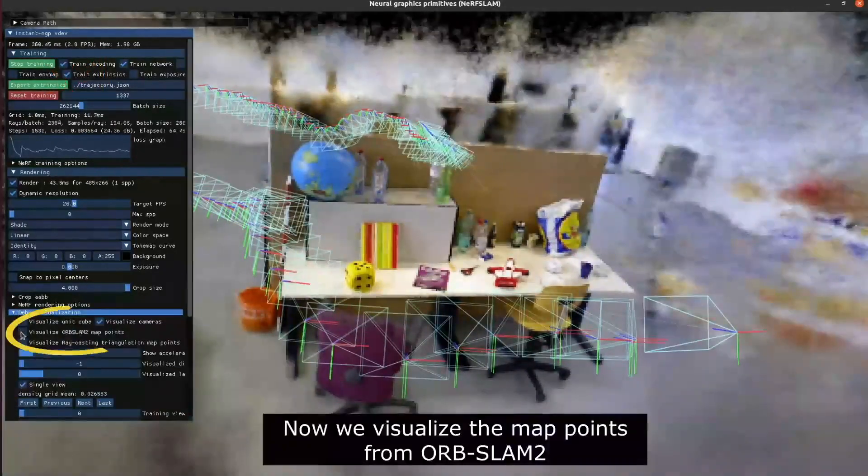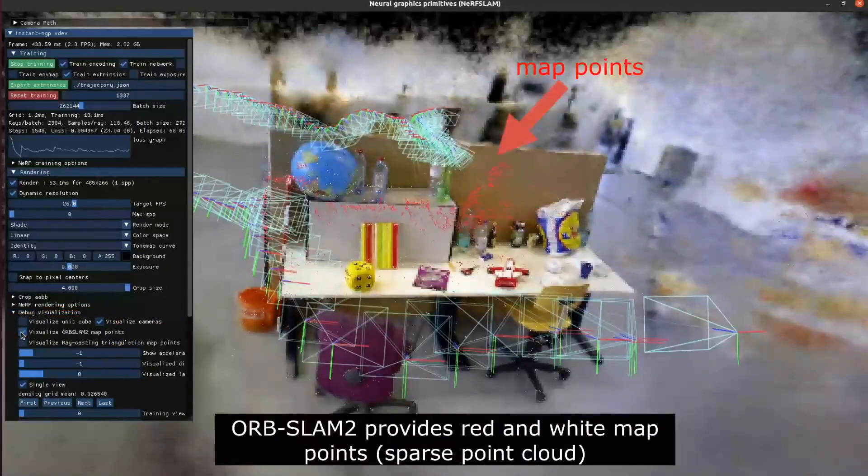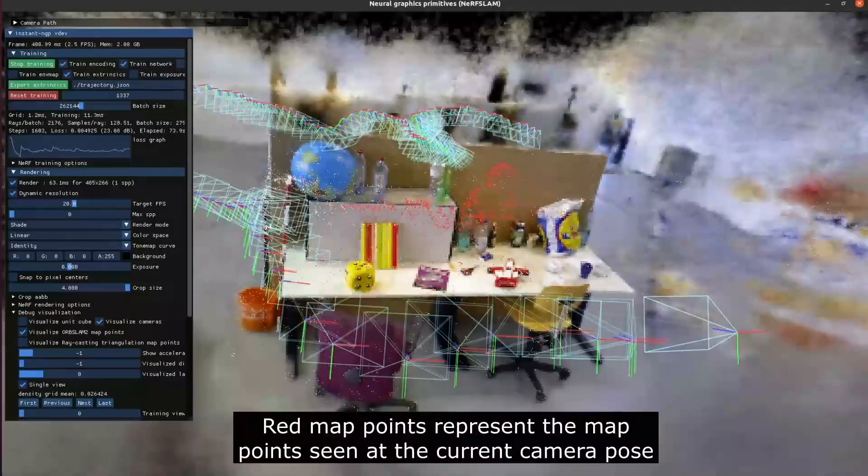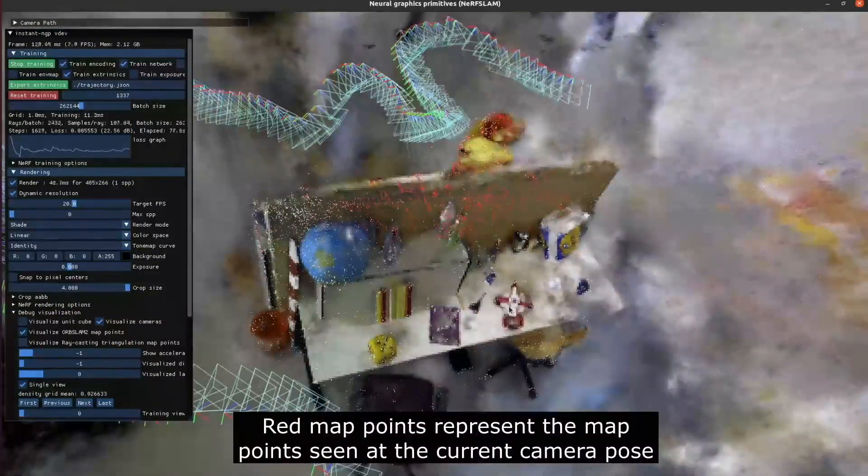Now we visualize the map points from ORB-SLAM 2, which provides red and white map points, the sparse point cloud. The red map points represent the map points seen at the current camera pose.